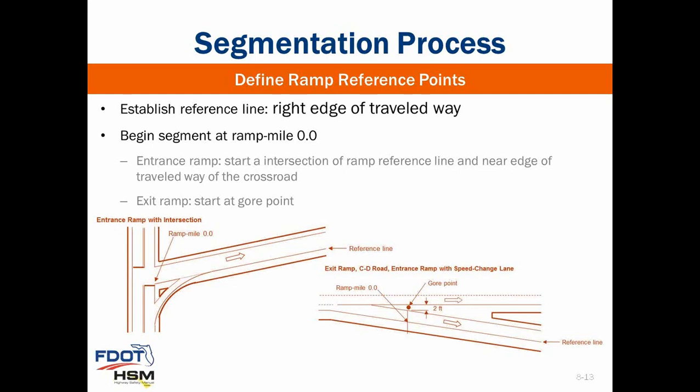The start of the ramp reference line is labeled ramp mile 0.0, and the location of each downstream ramp curve is specified as the distance from this starting point. The reference line for an entrance ramp ends at the gore point where the ramp merges with the freeway, and the reference line for an exit ramp ends at the point where the line intersects with the near edge of the crossroad.